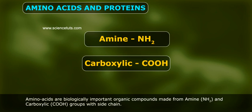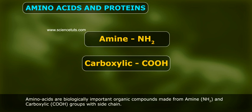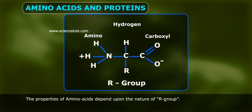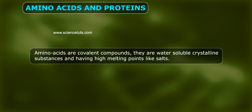Amino acids are biologically important organic compounds made from amine (NH2) and carboxylic (COOH) groups with a side chain. The properties of amino acids depend upon the nature of the R-group. Amino acids are covalent compounds.